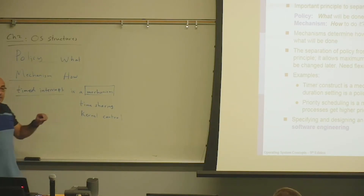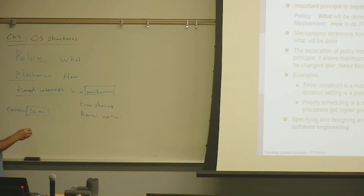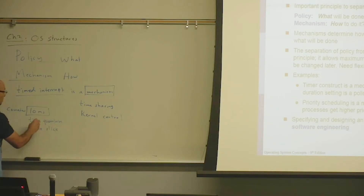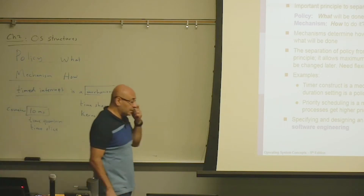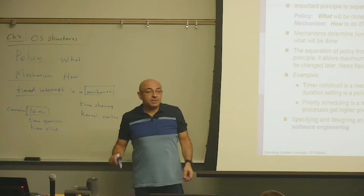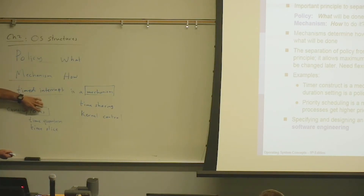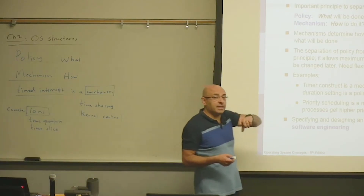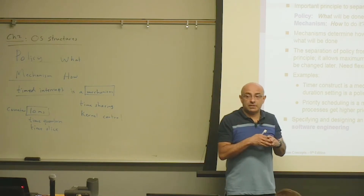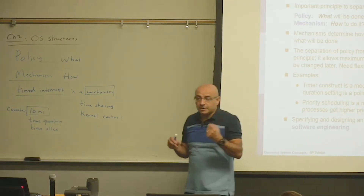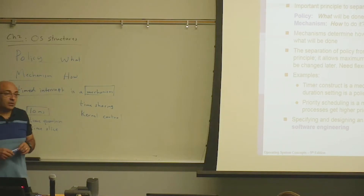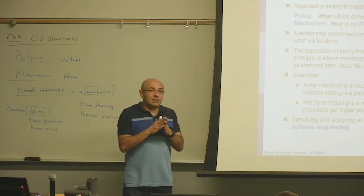When the kernel sets that counter to a given value — say, 10 milliseconds — that is what we call the time quantum or time slice. The time quantum that the system gives to a certain process is a policy. This policy depends on the scheduling algorithm. How long the time quantum is may vary, and in fact not all processes may get the same time quantum. Some processes may get longer time slices than others depending on the scheduling algorithm. So deciding how long that time quantum is — that's a policy.